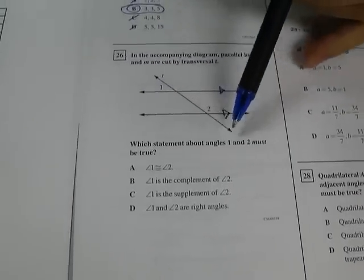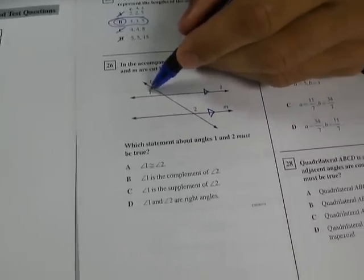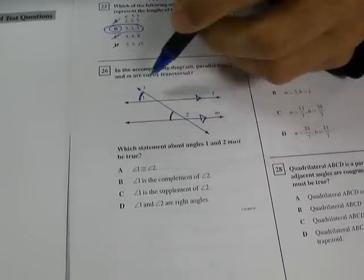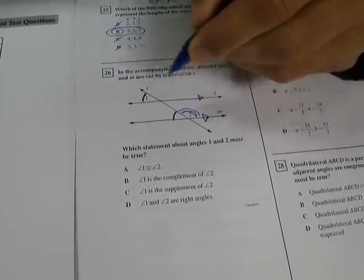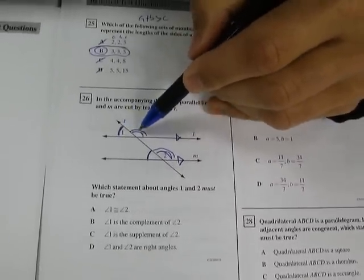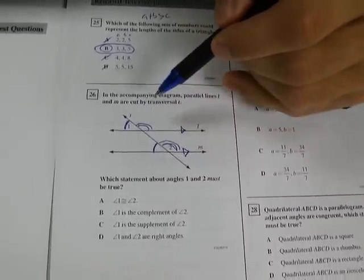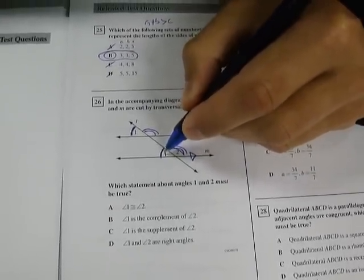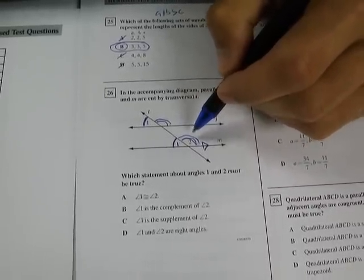Which statement about angles 1 and 2 must be true? Let's think about this. Angle 1 here has a corresponding angle that is congruent to it, and it's this angle here. So these two angles are congruent. In the same way, angle 2 has a corresponding angle which must be congruent to it. So if you think about this, angle 1 and this angle are a linear pair, just as angle 2 and this angle are a linear pair. And that means that they're supplementary. So if this angle and this angle are congruent, I can say that angle 1 is the same as this one. Therefore,